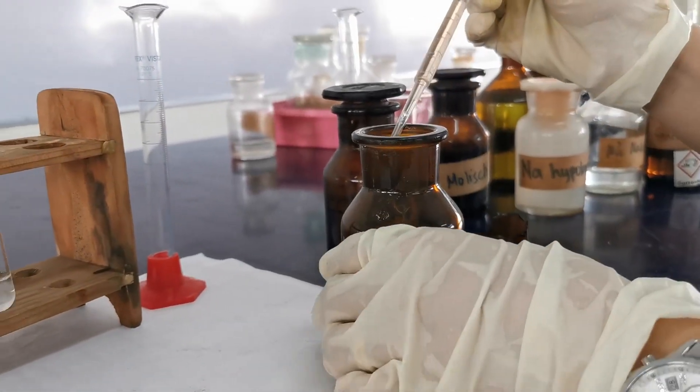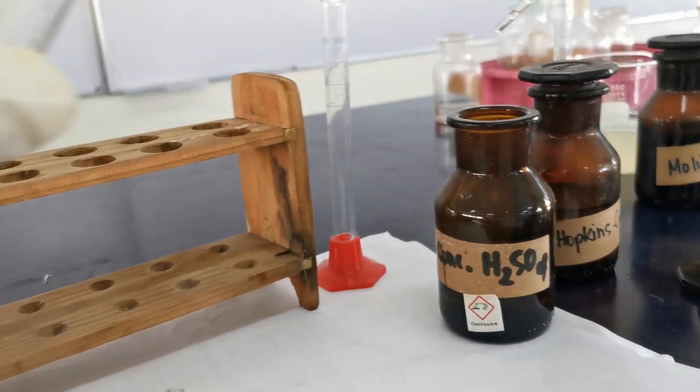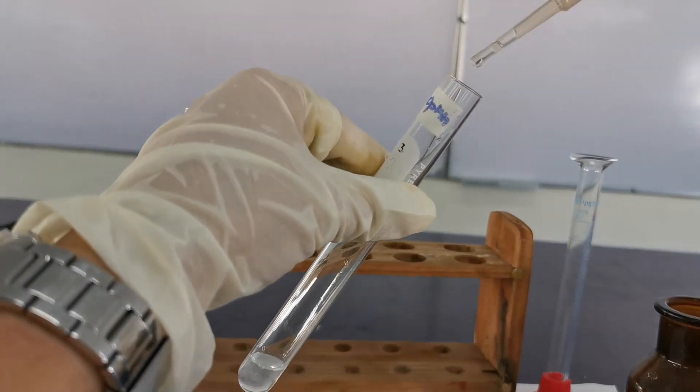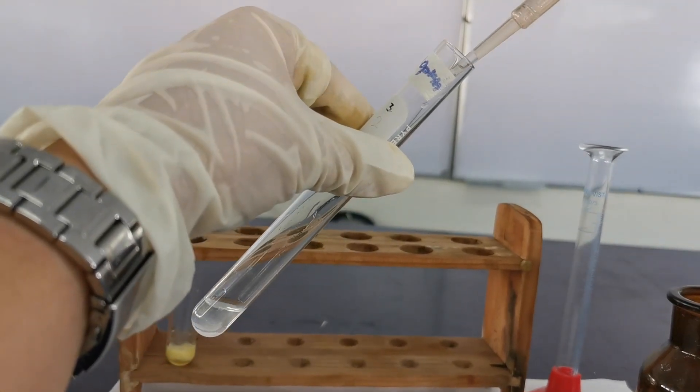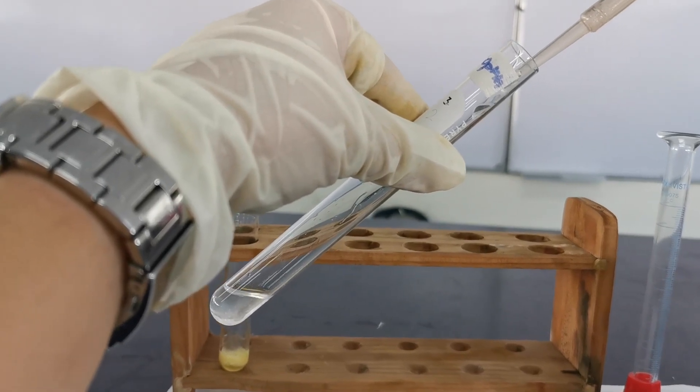Incline the tube and allow 10 drops of concentrated sulfuric acid to flow to the side of the tube to form a layer of acid beneath the protein mixture. What is the color produced at the point of contact of the two liquids?